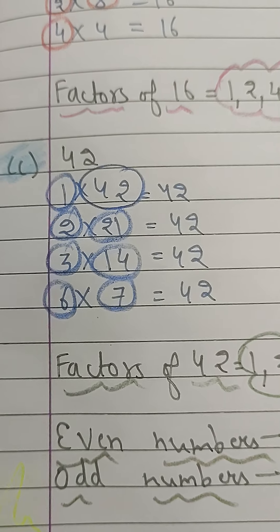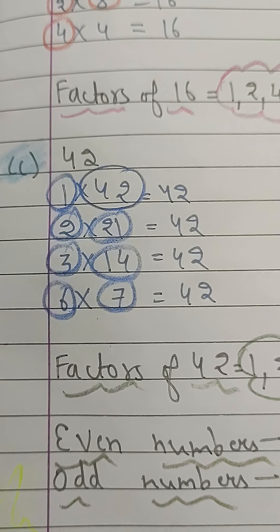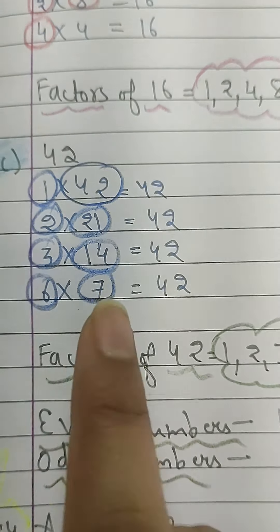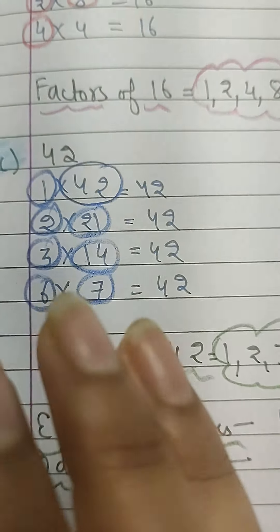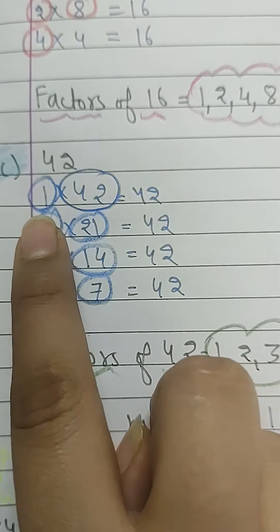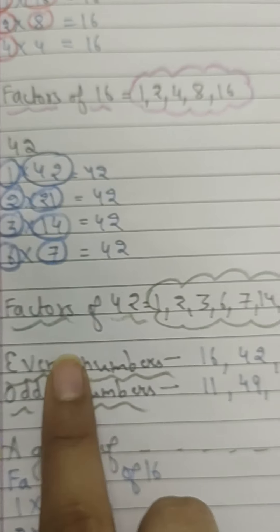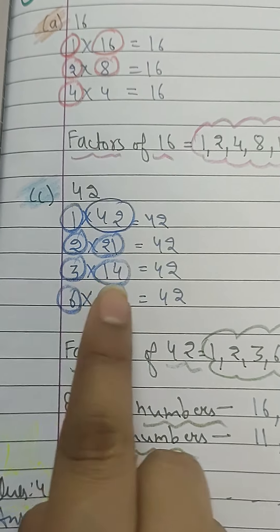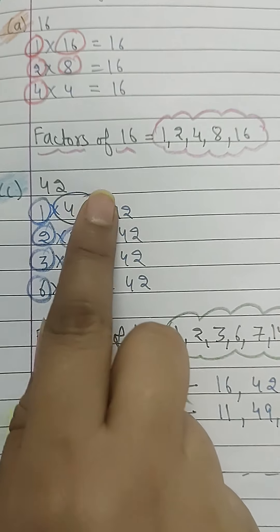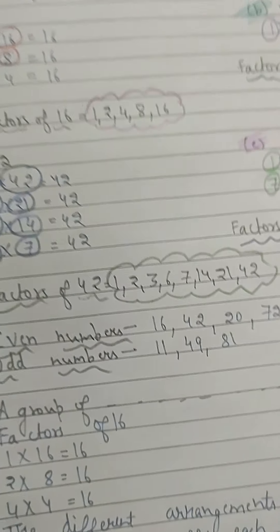4 does not have 42, 5 does not have 42, but 6 does — 6 multiplied by 7 equals 42. We are not going to write 7 again since it's already covered. 8, 9, 10, 11, 12, 13 do not have 42. So the factors of 42 are: 1, 2, 3, 6, 7, 14, 21, and 42. You can also write it as: 1×42, 2×21, 3×14, 6×7.